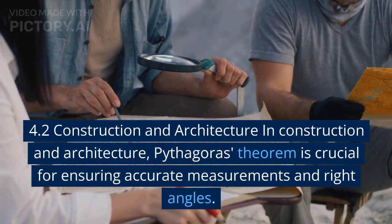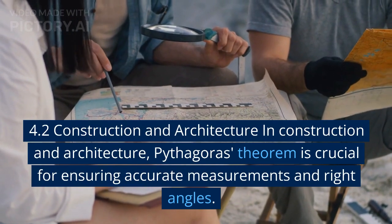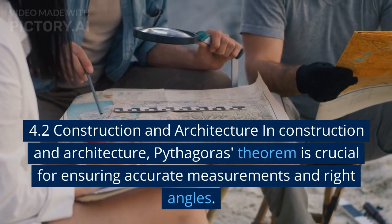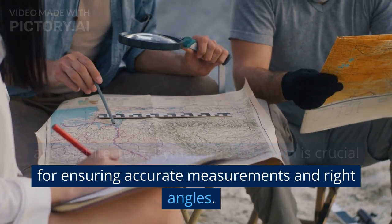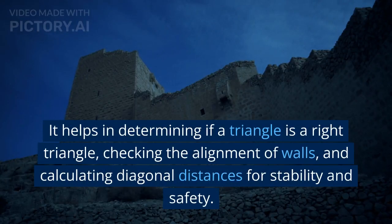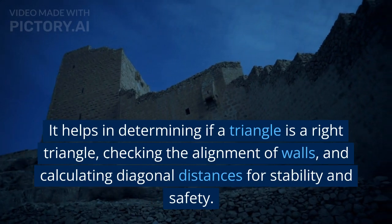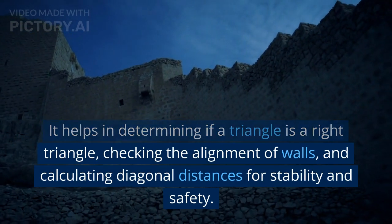Construction and Architecture: In construction and architecture, Pythagoras' theorem is crucial for ensuring accurate measurements and right angles. It helps in determining if a triangle is a right triangle, checking the alignment of walls, and calculating diagonal distances for stability and safety.